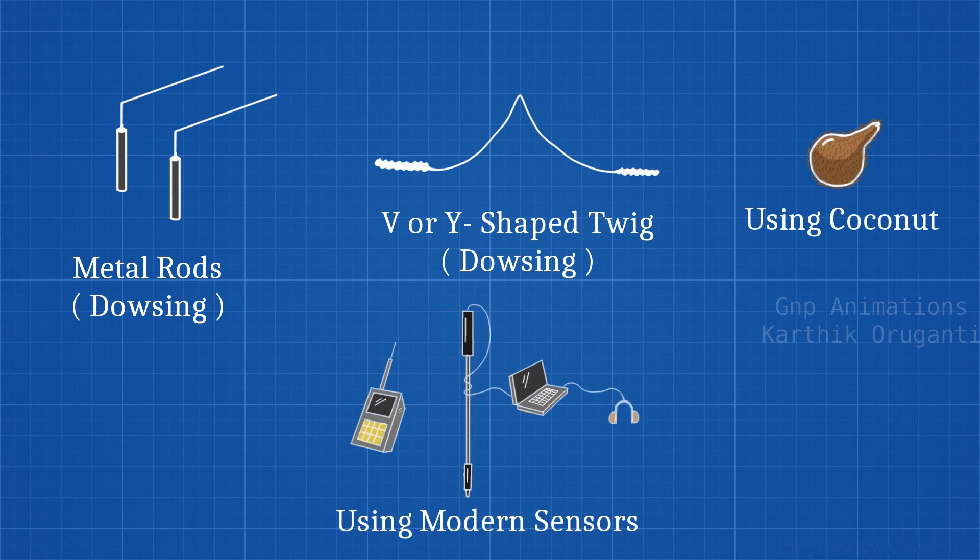There are so many methods people use to find groundwater. Most of them are not guaranteed methods. The most trusted one is using modern sensors based on hydrogeophysics, for example, proton magnetic resonance meter. That's a complex topic and this video is just basic information.